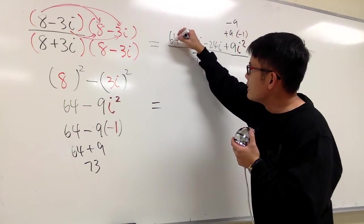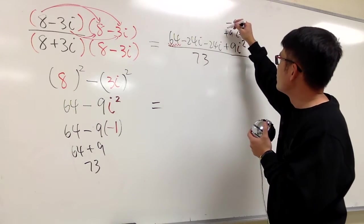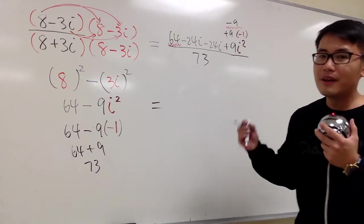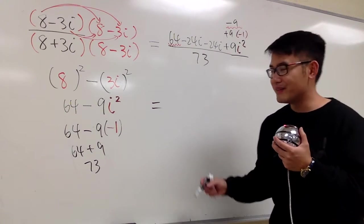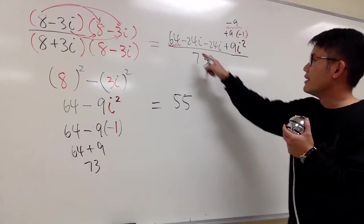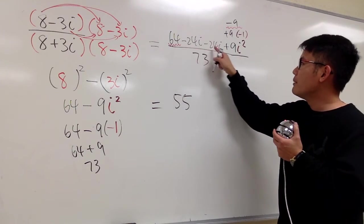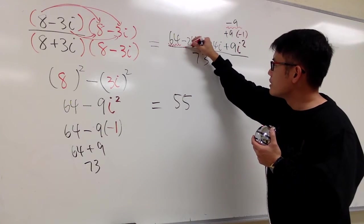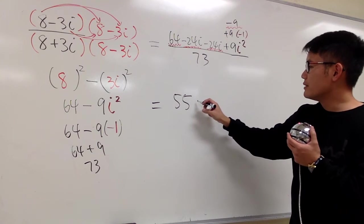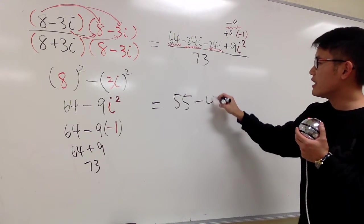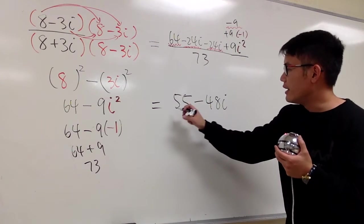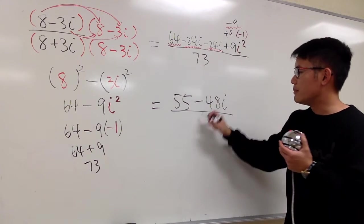So you see, we have 64 right here, and then we have to minus 9. What's 64 minus 9? It's going to be 55. Let's put that down. And then, negative 24i minus 24i. I'm looking at these two terms. Combine these two terms together, that will give us negative 48i. The i term stays. And this is all over 73.